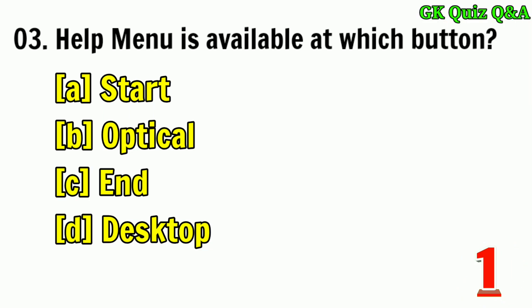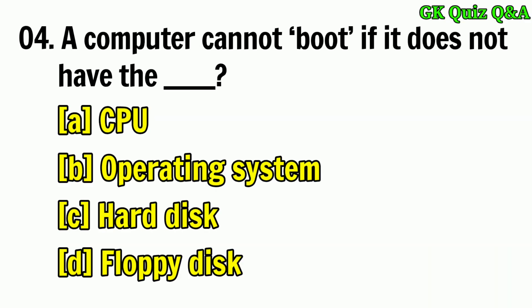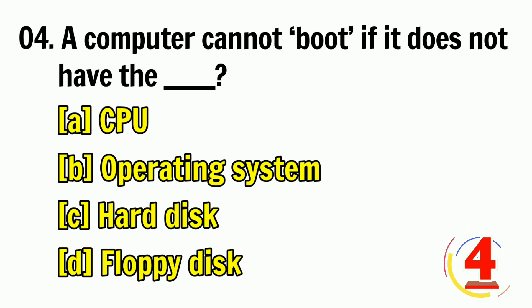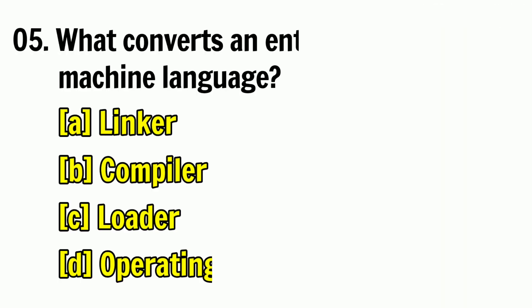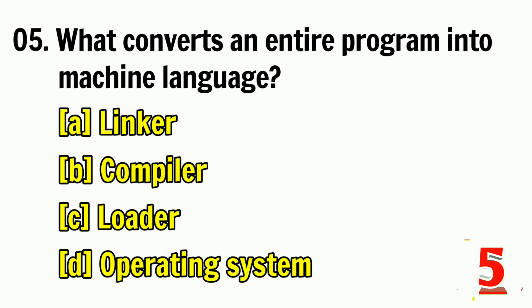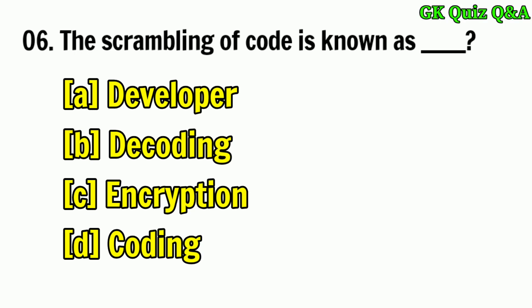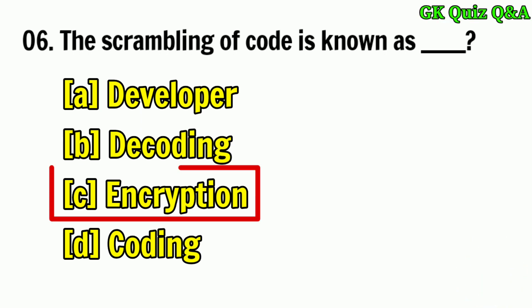A computer cannot boot if it does not have the — answer: operating system. What converts an entire program into machine language? Answer: compiler. The scrambling of code is known as — answer: encryption.